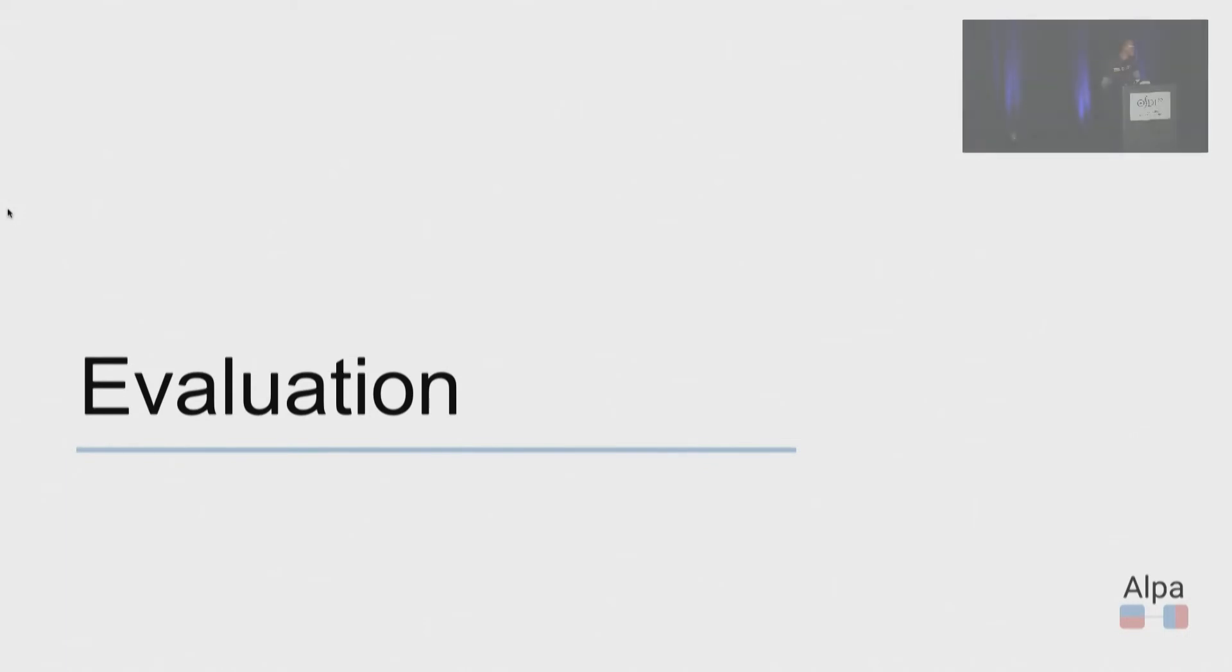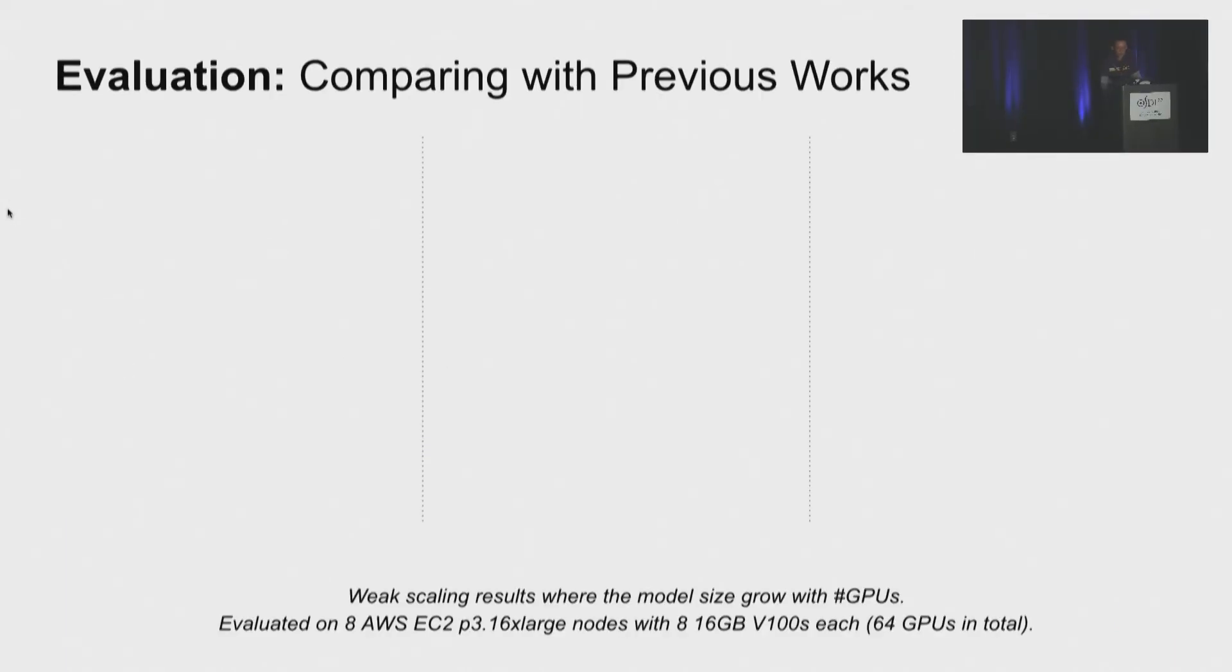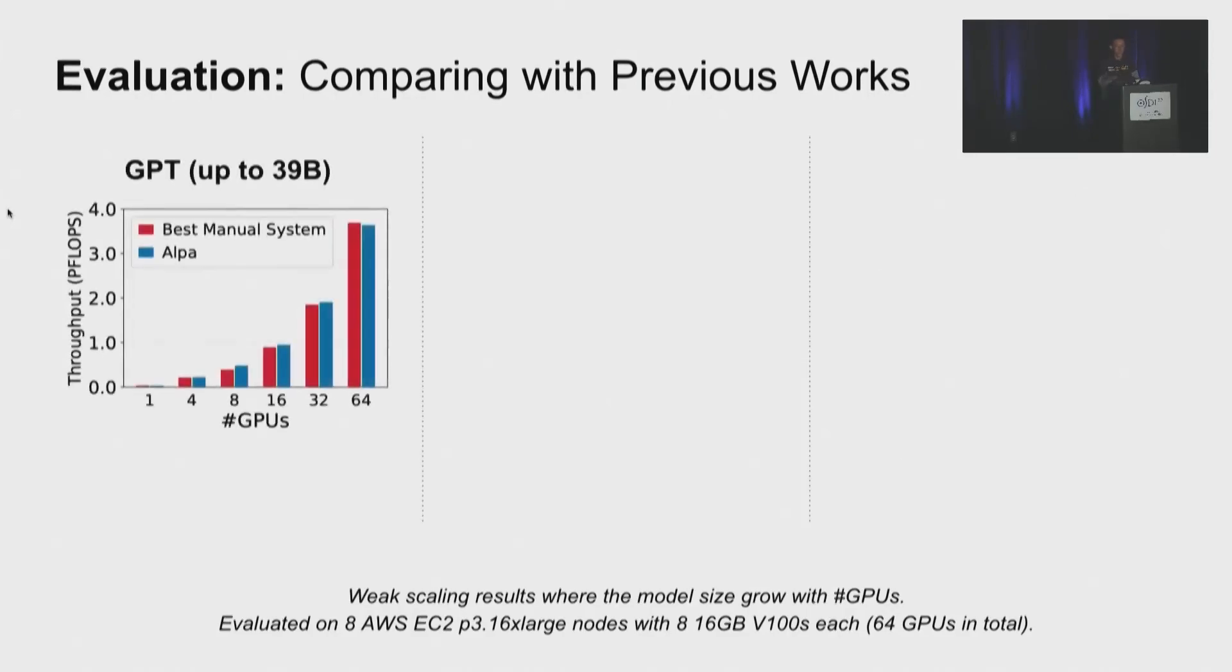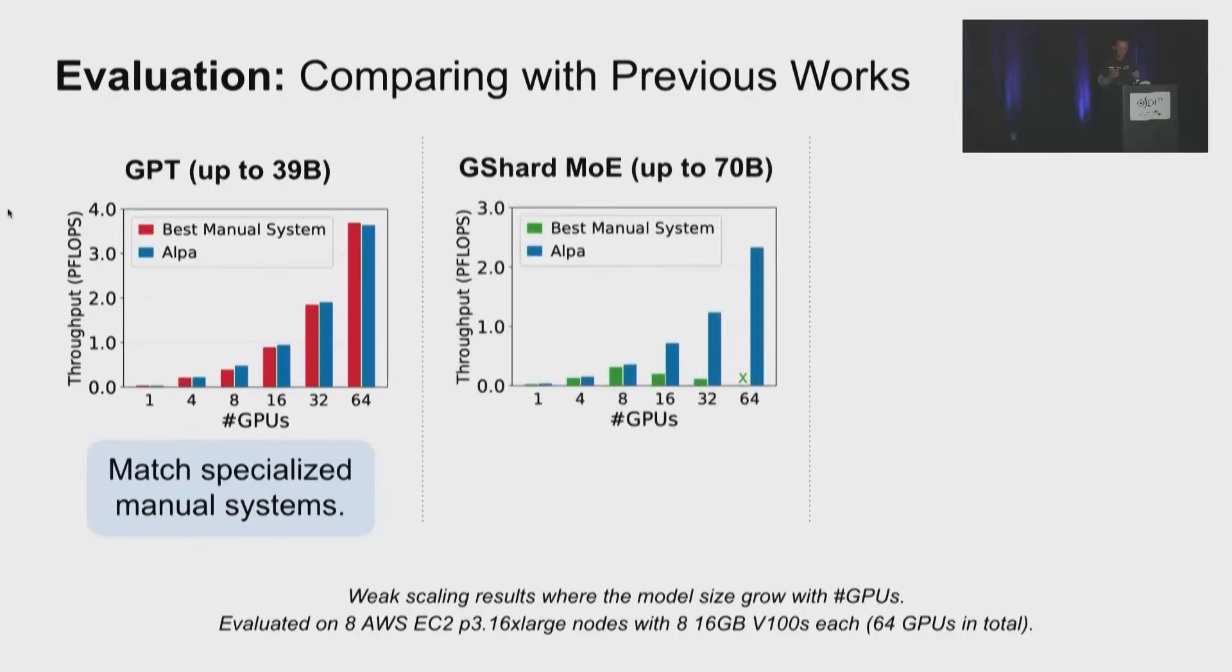So now let's move on to the evaluation of the Alpa paper. We compare Alpa with previous works on three widely used models. For GPT, which is the standard transformer model, we test for models up to 39 billion parameters. Because the transformer is an extensively studied model, we still can match the performance of the best existing expert design framework. Actually, we find almost identical parallelization strategies as the best manual system. So for GShard MOE, it's a transformer with additional mixture of expert layers. And we test for models up to 70 billion parameters. We show that we can outperform the best manual baseline on GPU by up to eight times on this AWS cluster.